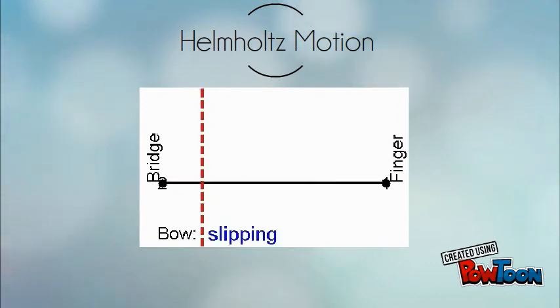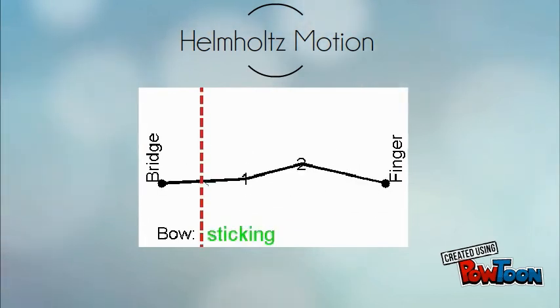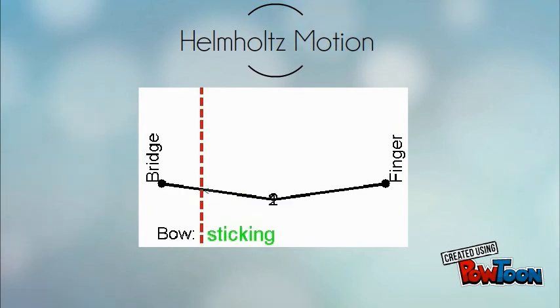There is also a maximum acceptable bow force too. If you press too hard with the bow, instead of a beautiful musical note, it will produce this nasty screeching noise as you can hear here.